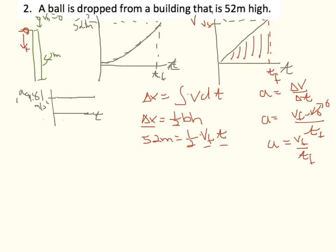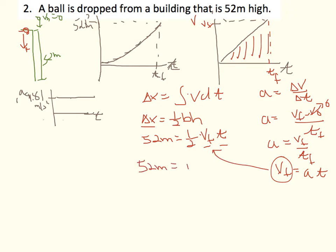Since one equation isn't enough, I'll also use that acceleration equals change in velocity over change in time: a = (vf − v₀) / t, which gives vf = at since v₀ = 0. Substituting vf = at into the triangle area equation: 52 = ½ × at × t = ½at². So 52 meters = ½at².